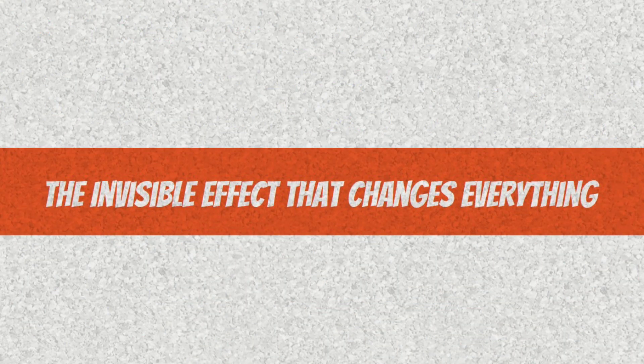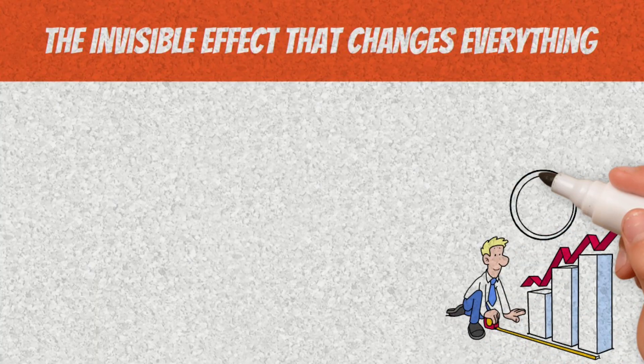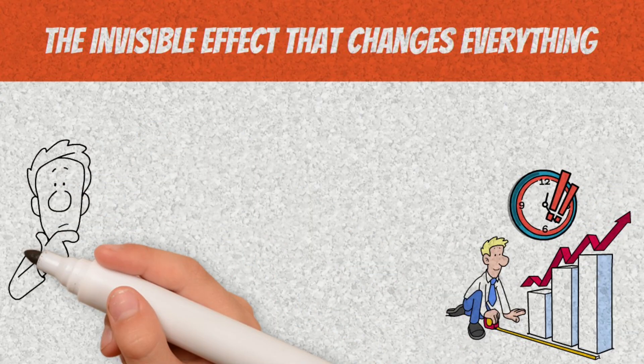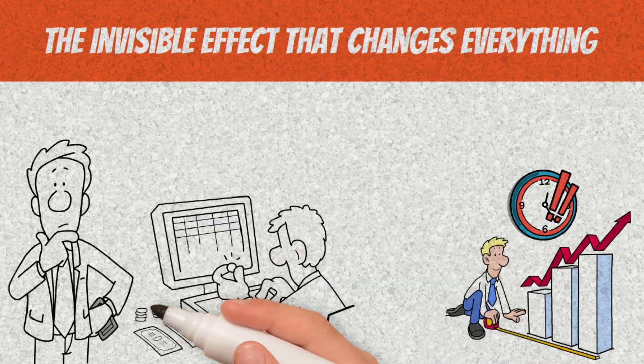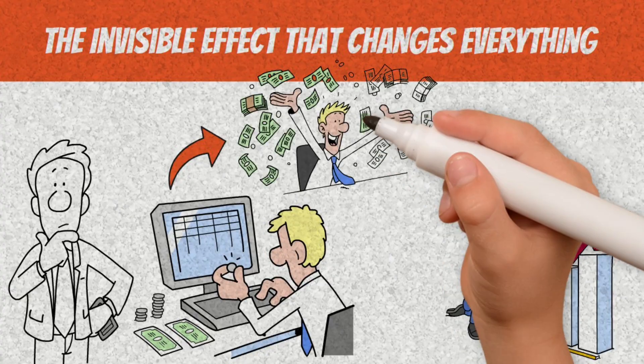The invisible effect that changes everything. What makes compound interest so powerful is not just the growth of the money, but the way this growth accelerates over time. At first, it seems almost insignificant. You invest, reinvest, and the numbers grow slowly. But at some point, something changes, and this change is almost magical.